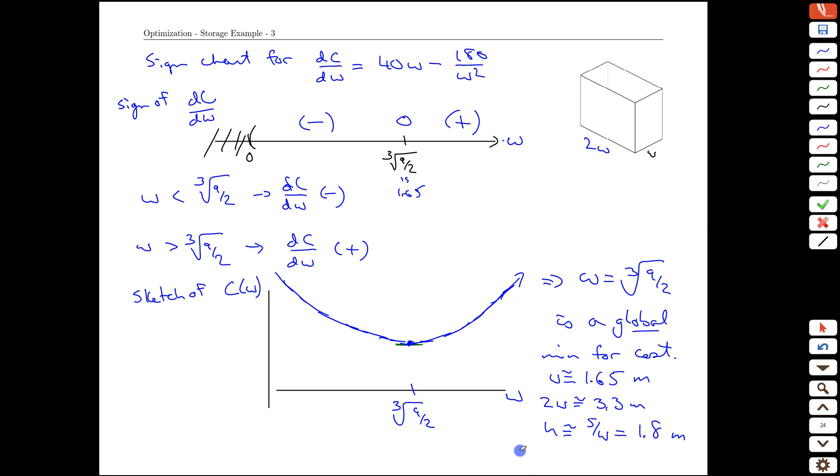So our cost function, we need a little bit more room here, our cost value at the optimum is going to be defined by our formula, which was 20w squared plus 180 over w. That was our original function. And if we calculate that out using our width of 1.65 meters, we're going to get a cost of approximately $163. That'll be the least expensive box that we can build that has the 10 cubic meter volume based on the particular cost that we use, the $10 per square meter for the base and the $6 per square meter for the sides.